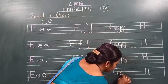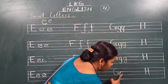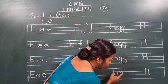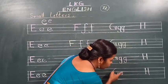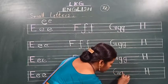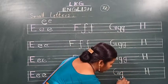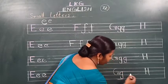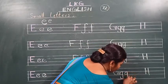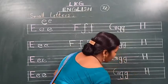Samajh mein aaya hai kya? Kaisa likhna hai? Curve banana hai. Phir kya karna? Isko idhar milana, join karna. Phir idhar se — dekho, last line tak lekar aana hai, ghumaana. Okay students? This is small letter g. Samajh mein aaya hai kya? G kaisa likhna hai?